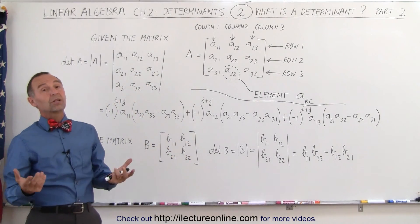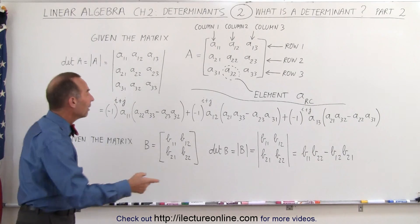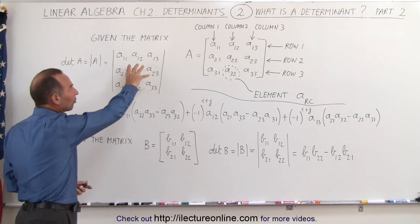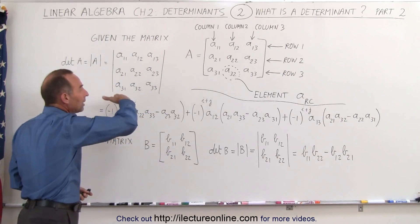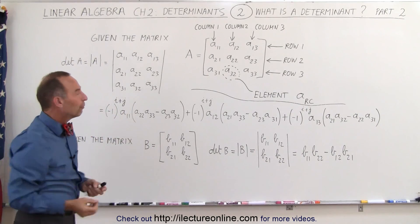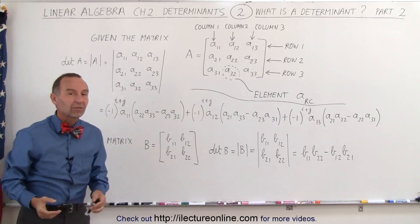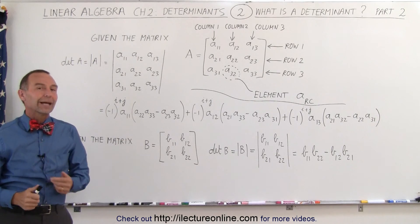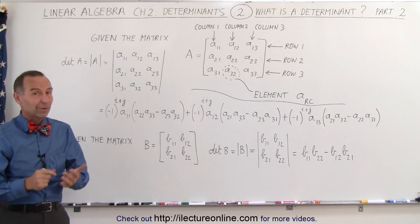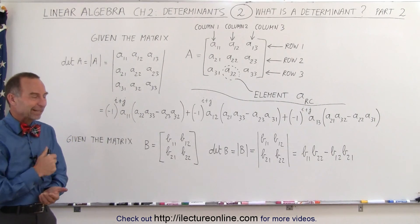So the determinant is simply a single number obtained by multiplying the elements of your matrix in such a way, multiplying, adding, and so forth, that you get a single number, which then represents the determinant of your n by n matrix. It has to be a square matrix. And that's how it's done.